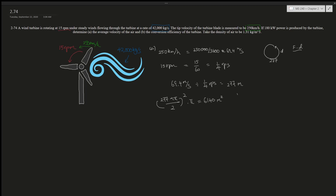Now we have the area and we want to find velocity in meters per second. Looking at the units: we have kg per second and kg per meter cubed from the air density, plus the area in square meters. We want to cancel kilograms and keep meters over seconds — three minus two is one — so these two values together will give us the velocity. We start with the 42,000 kilograms per second.